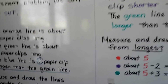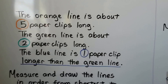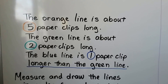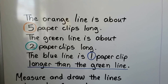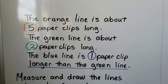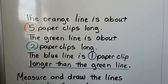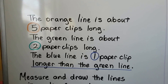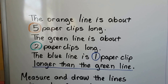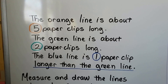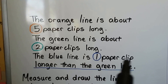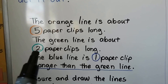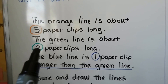Here's our first problem. The orange line is about 5 paperclips long. The green line is about 2 paperclips long. The blue line is 1 paperclip longer than the green line, so it's comparing the blue line with the green line. If the blue line is 1 longer than the green one, and the green one is 2, it must be 1 more than 2.